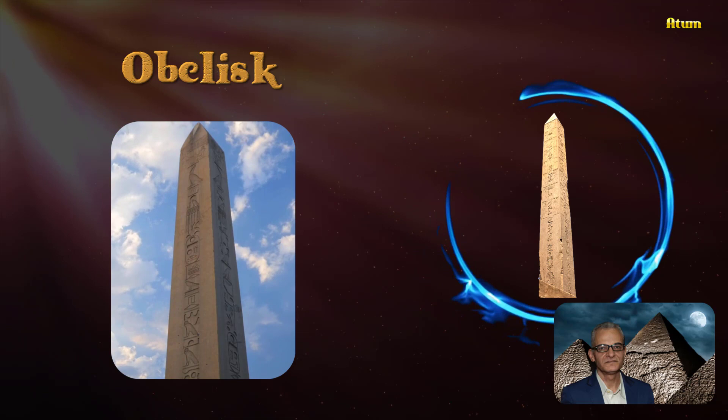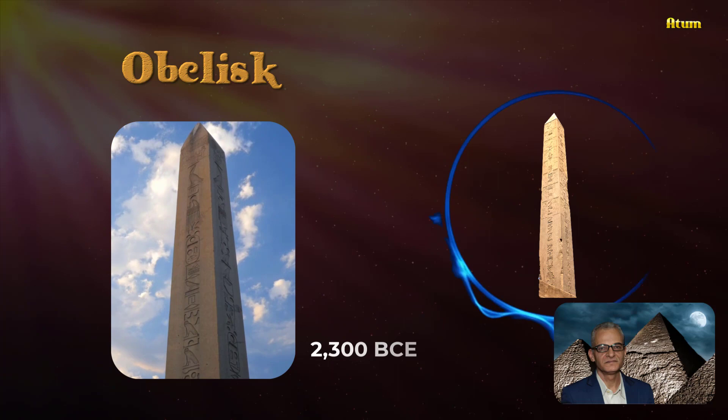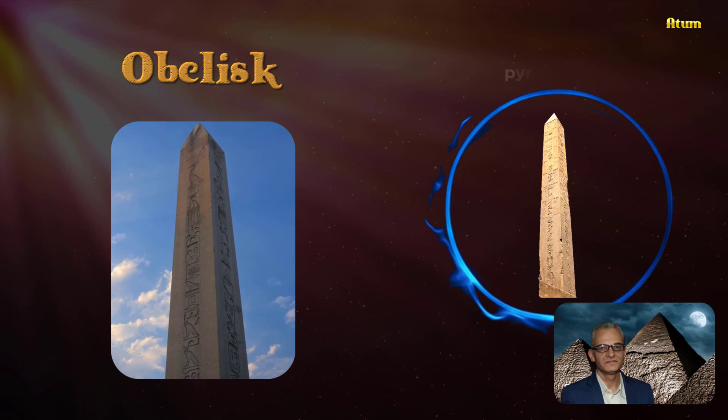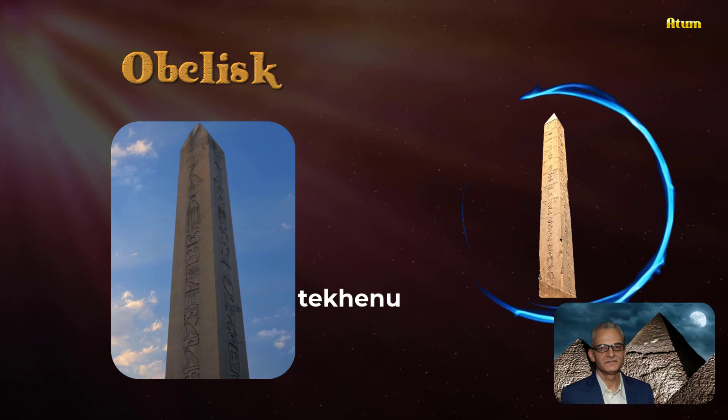The obelisk is an architectural feature that originated in the Old Kingdom of Egypt around 2300 BC. It is a tall, four-sided, narrow-tapering monument, which ends in a pyramid-like shape or pyramidion at the top.